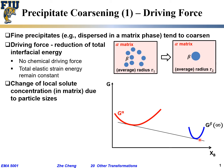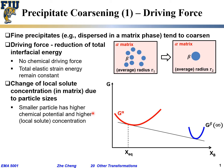Under equilibrium conditions, the common tangent between the alpha matrix and the beta phase with infinite radius curvature determines the chemical potentials. The tangent point on the alpha side gives x_eq, the equilibrium solute concentration in the alpha phase when in equilibrium with this large beta precipitate. Smaller particles tend to have higher chemical potential and higher solute concentration.